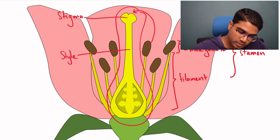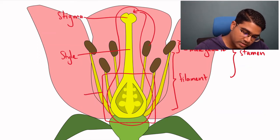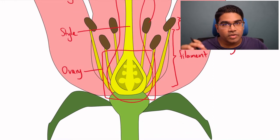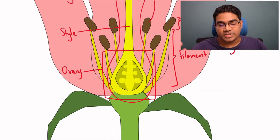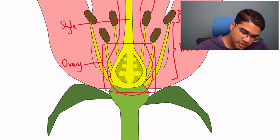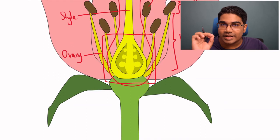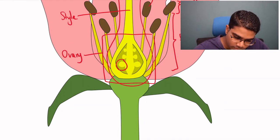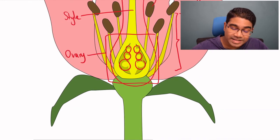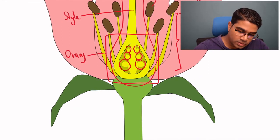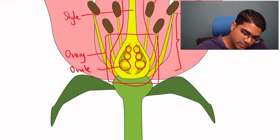And then right at the bottom, the bulbous part at the bottom here, is known as the ovary. And yes, in the ovary is where the female gametes are. The female gametes are egg cells. So we have the female gametes in the ovary, specifically in another structure called the ovule. So if you look at all these smaller spheres inside the ovary, this is known as the ovule. And this is where the female gametes, which is the egg cell.